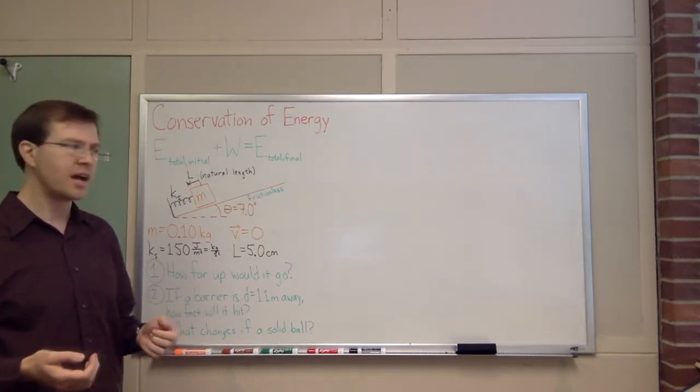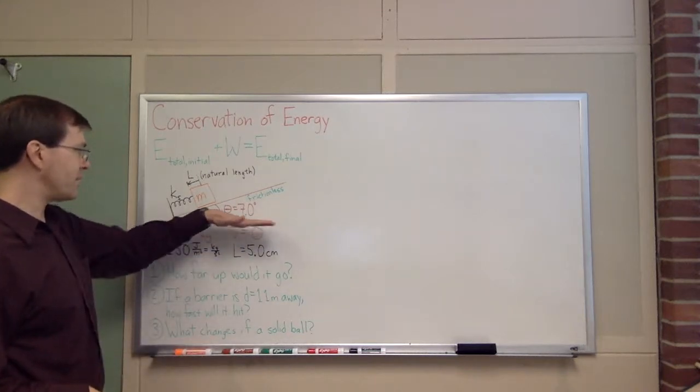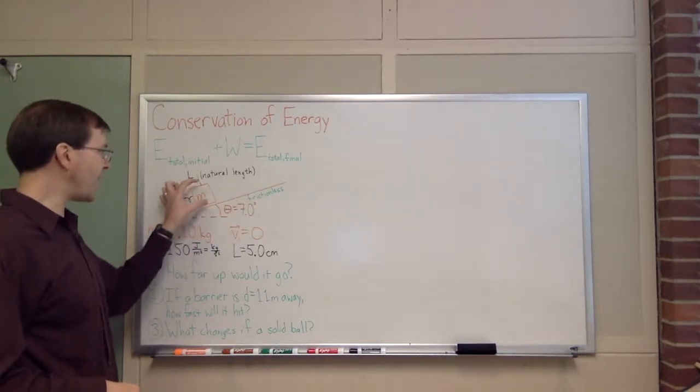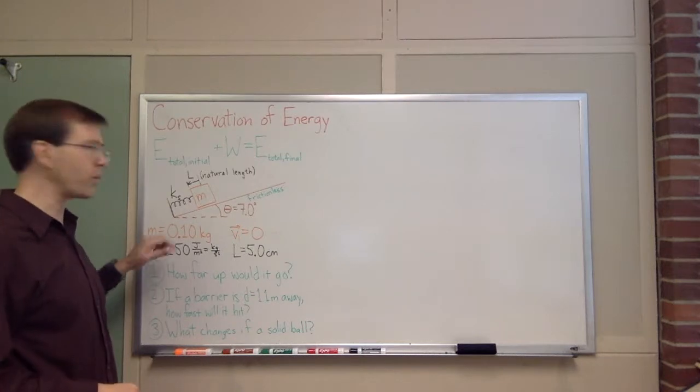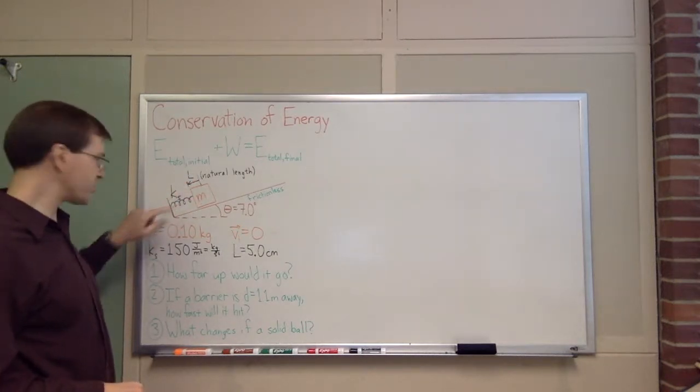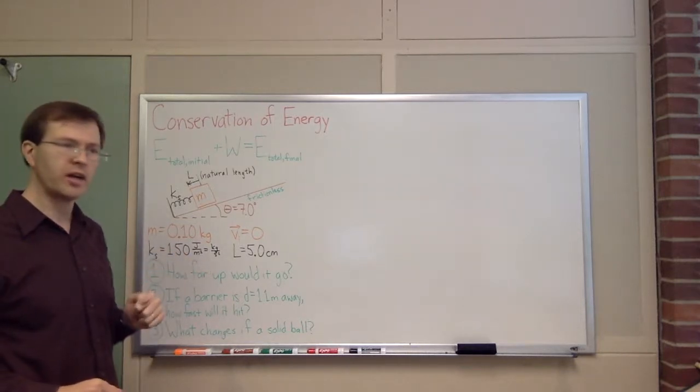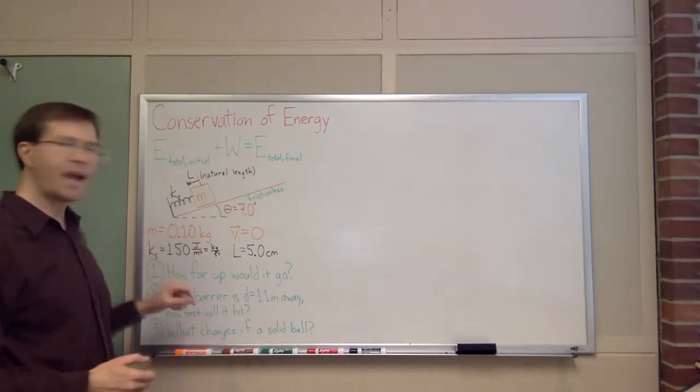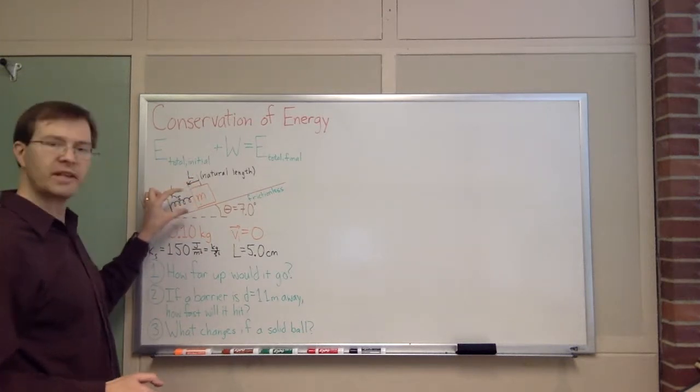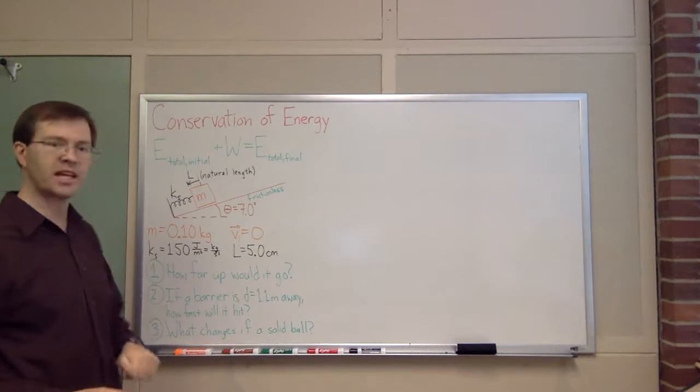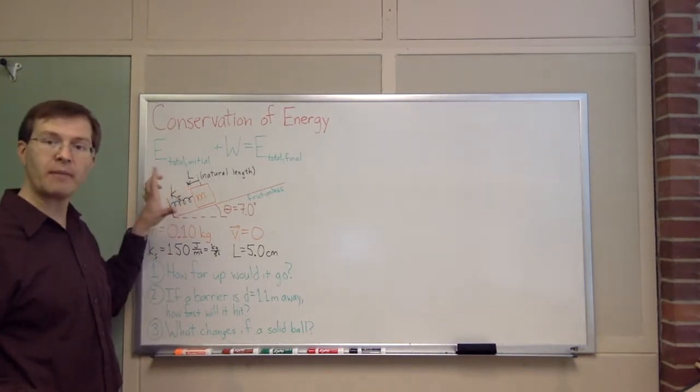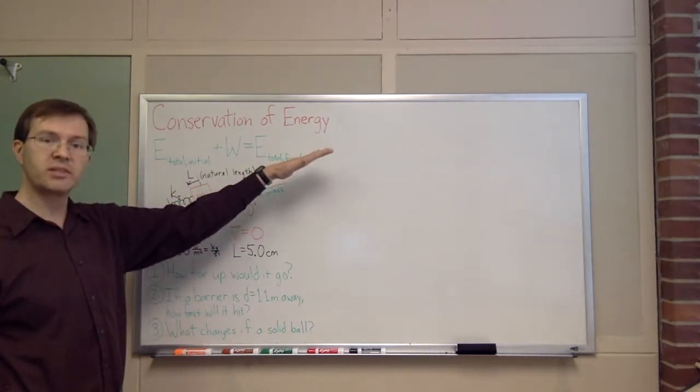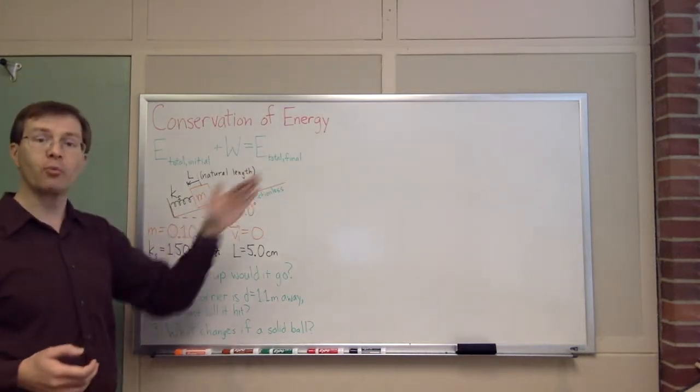Here's our scenario. I've got a ramp that's tilted 7 degrees up from horizontal. On that ramp, which is frictionless for the moment, I've got a block of mass m equals 0.1 kilograms that I've pulled backward against a spring with spring constant 150 joules per meter squared. I'm going to pull the mass back by a distance L from the natural length of the spring. That distance L will be 5 centimeters. And I'm going to hold it there at rest. And then my plan is I'm going to let go of that mass. And it's going to go shooting up the ramp. I want to know how far up would it go before it stopped.